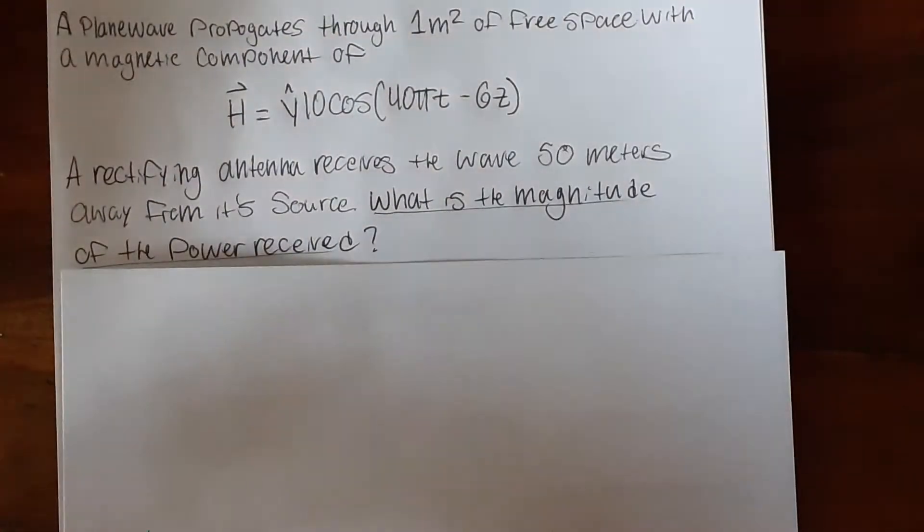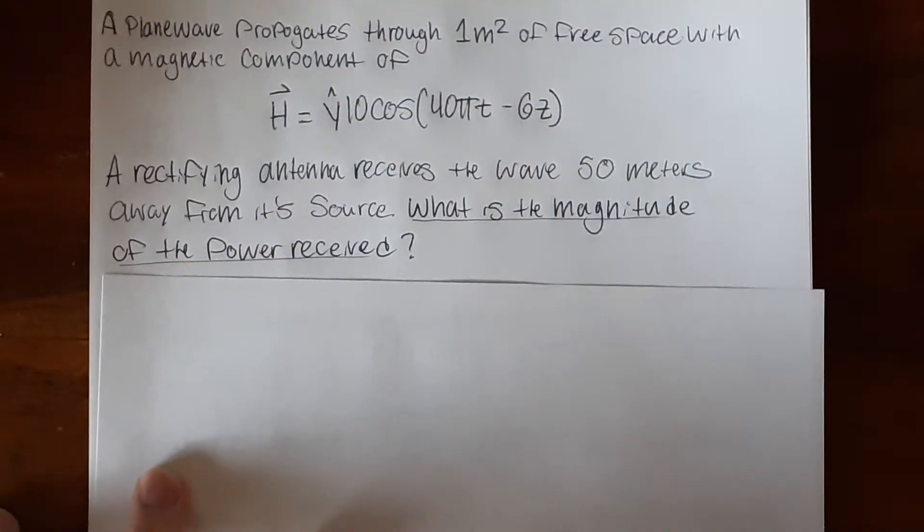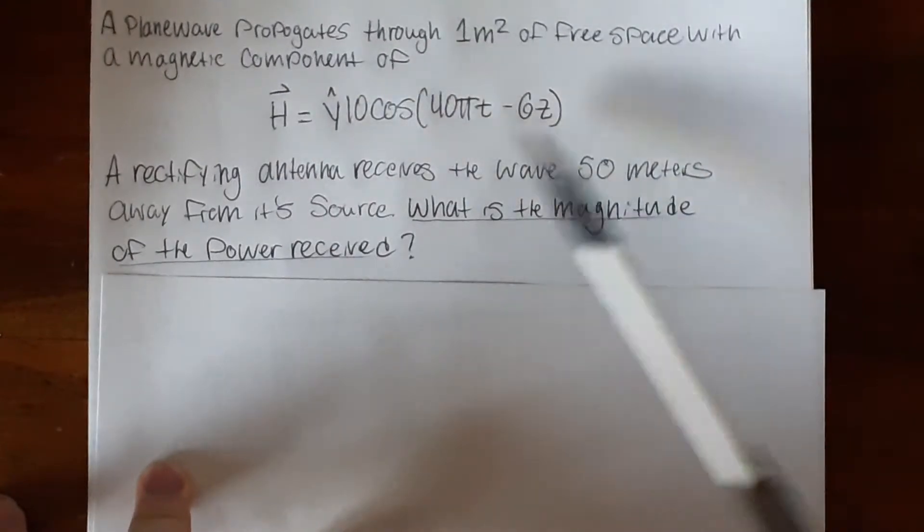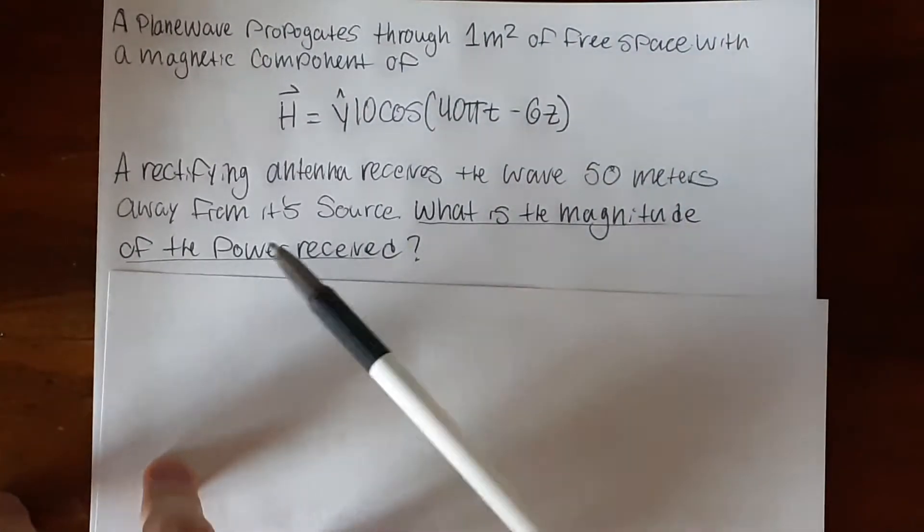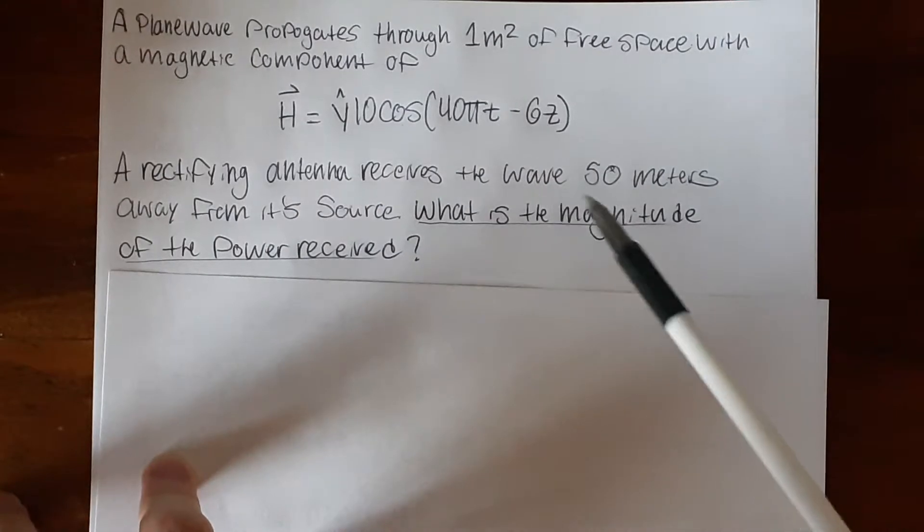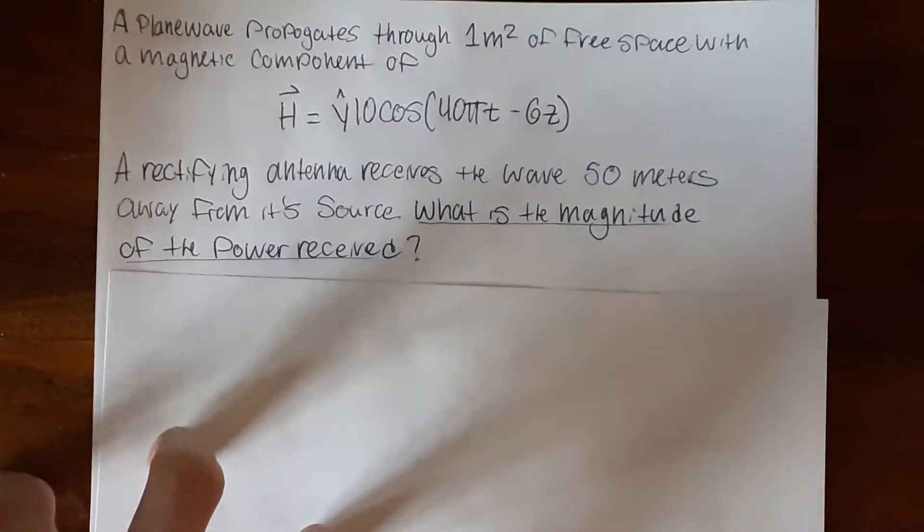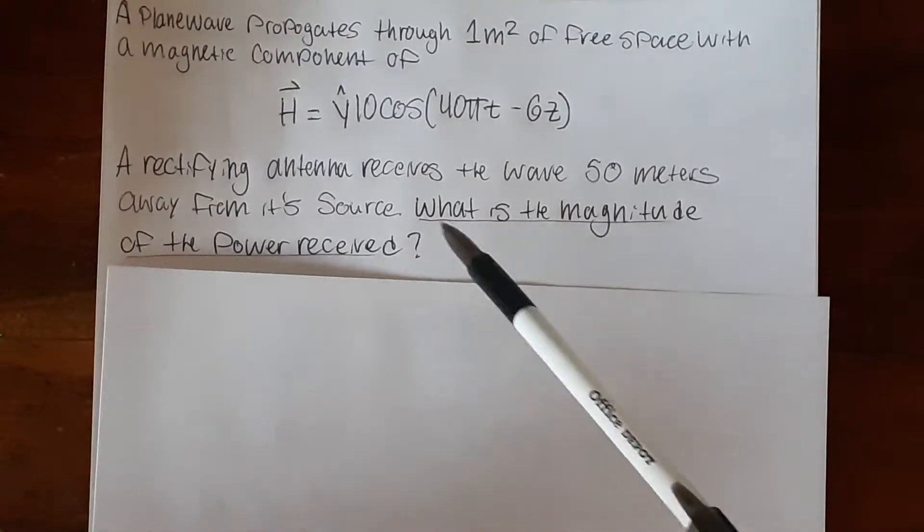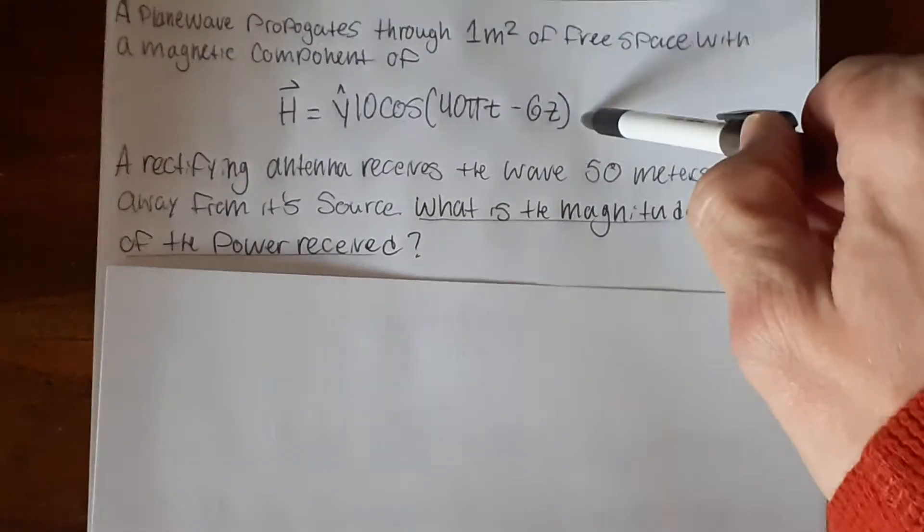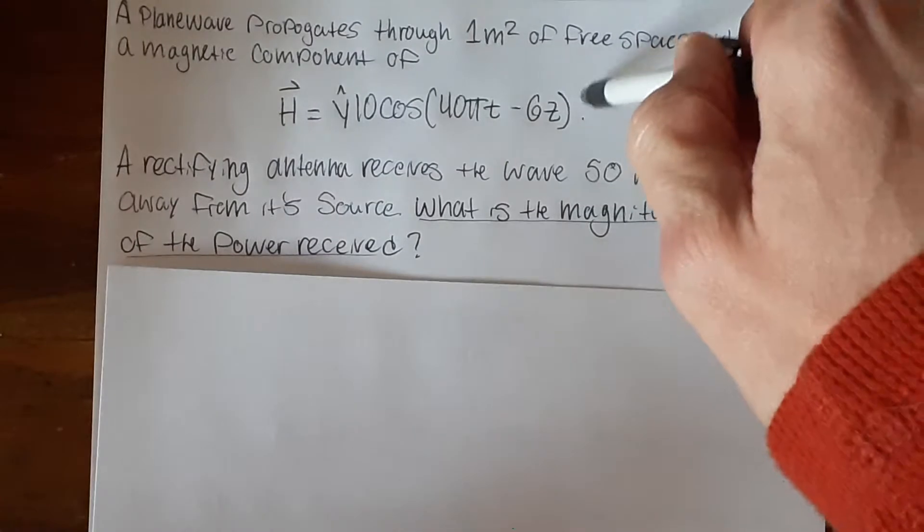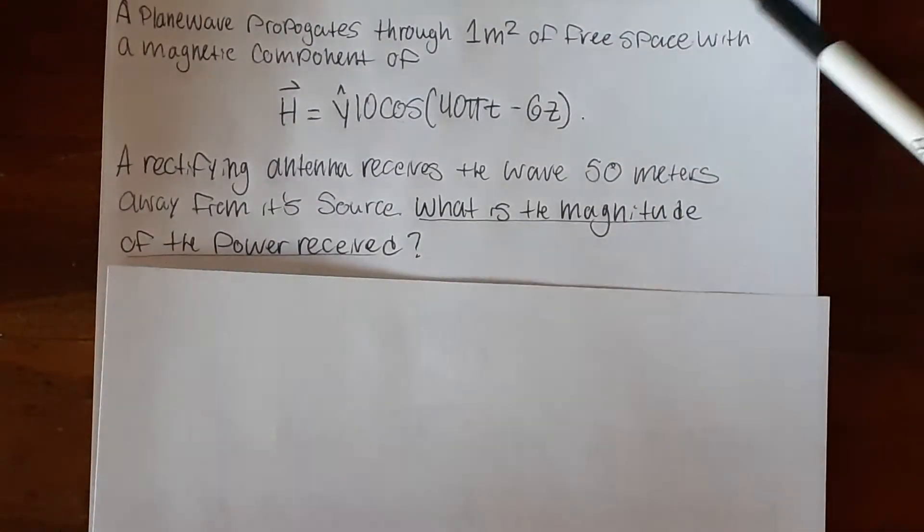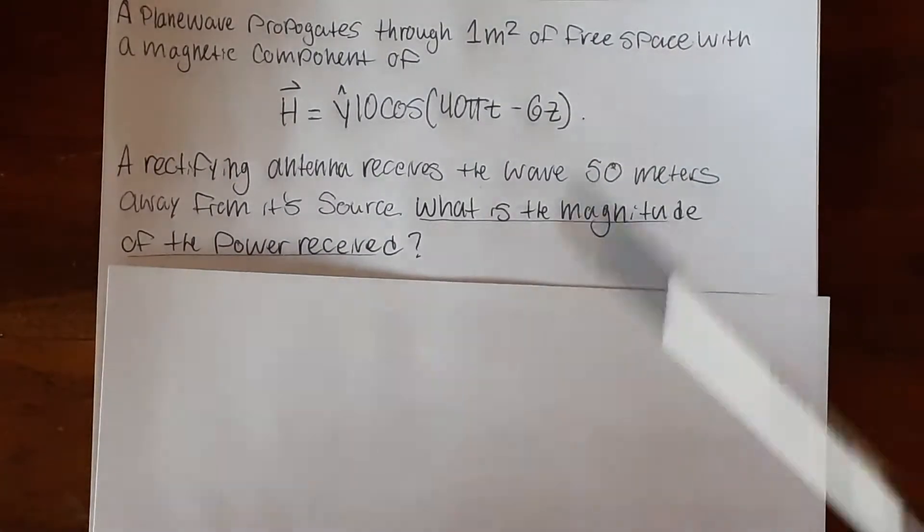So a plane wave propagates through one square meter of free space with a magnetic component of this equation right here. A rectifying antenna receives the wave 50 meters away from its source. What is the magnitude of the power received? So from what we understand we have a source which is giving this wave or this magnetic component and once it gets to the receiving end it's going to be a lot less so we'll see what happens.